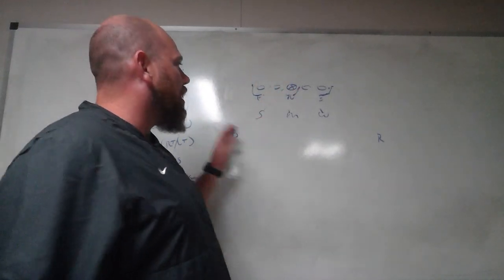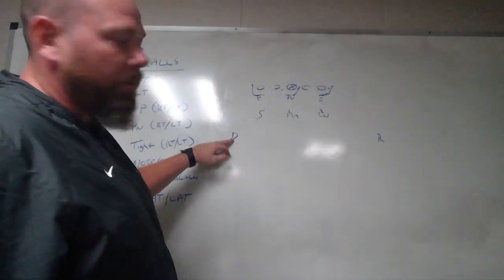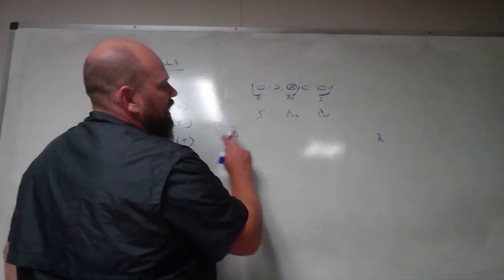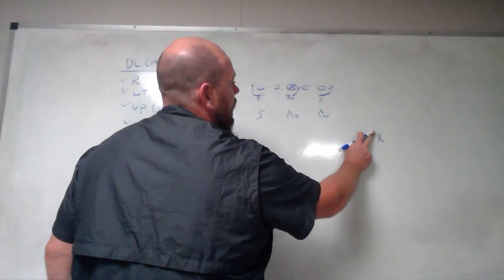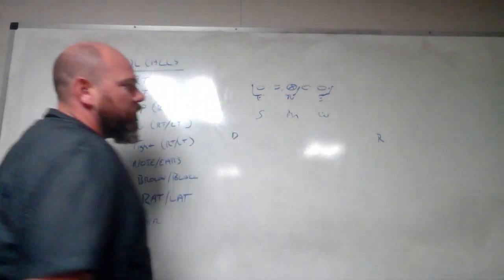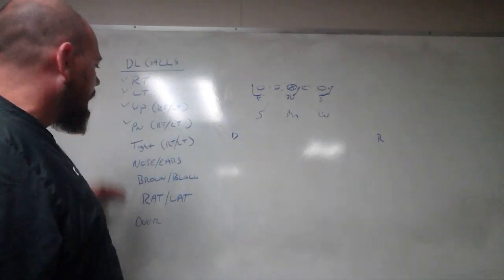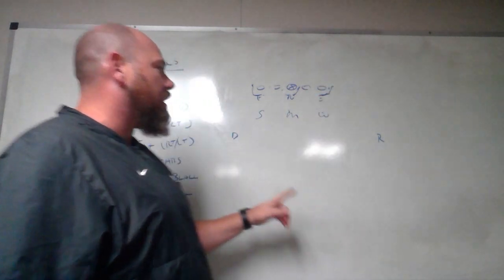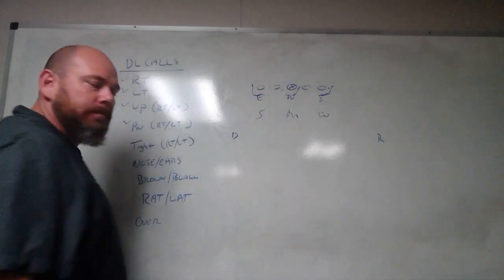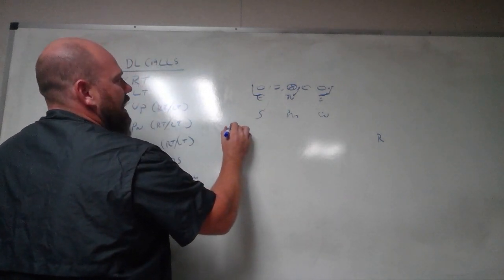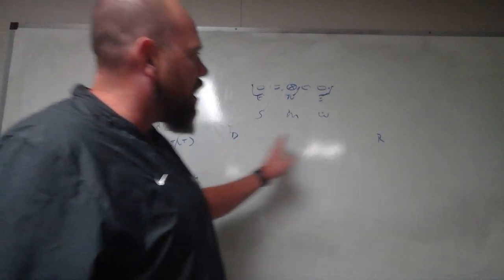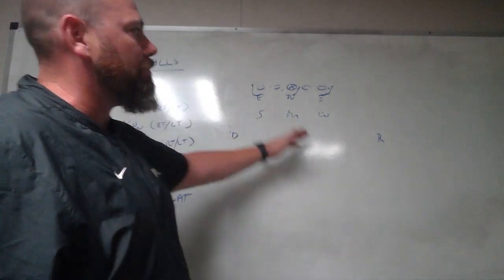We can call Right Dog — the Dog blitzes off the edge from 10-yard depth, rolling and hitting the line of scrimmage at the snap, using back-to-pitch technique. Left Rover does the same thing. For Dog and Rover, any front call means they're always blitzing outside to C-gap responsibility, unless it is an Up call — if it's an Up call, they come underneath the defensive end.